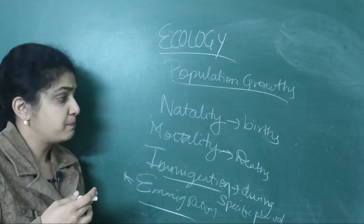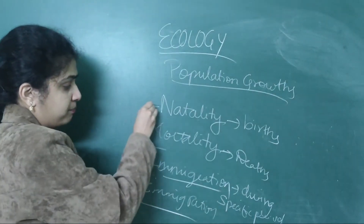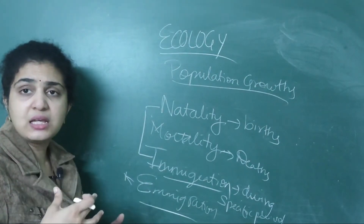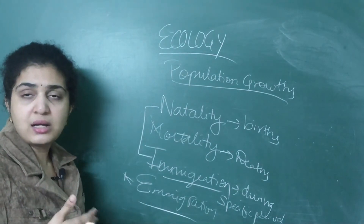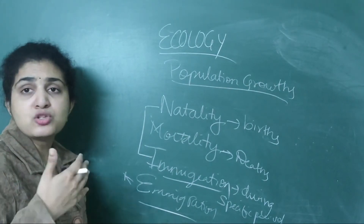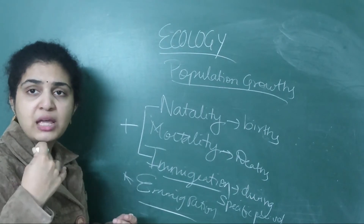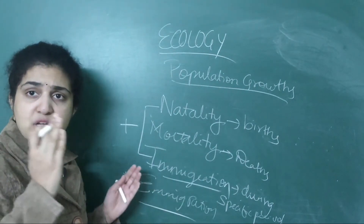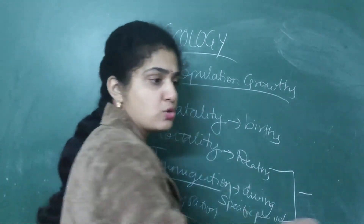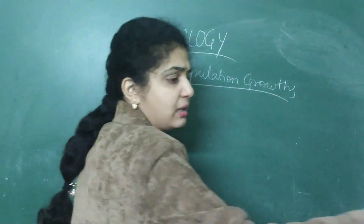If people are coming to India (immigration) and people are being born (natality), the population size increases. If people are dying (mortality) or moving away (emigration), the population size decreases. Natality and immigration contribute positively; mortality and emigration contribute negatively. I have depicted this in a flow chart — draw it and you will understand how population size changes.